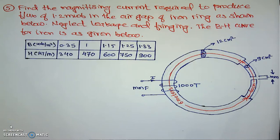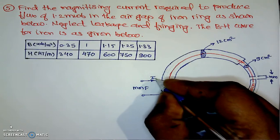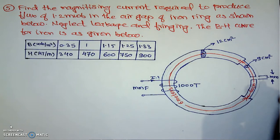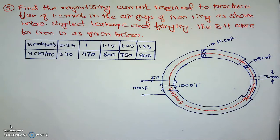Hello, I am Professor N.B. Hoodle from G.H.R.I. SUNY Institute of Engineering and Technology. In this video we will try to calculate the magnetizing current required to produce the flux of given value, which is 1.2 mWb, in the magnetic circuit shown in this particular figure.